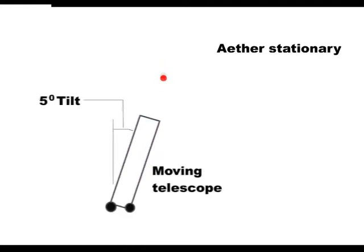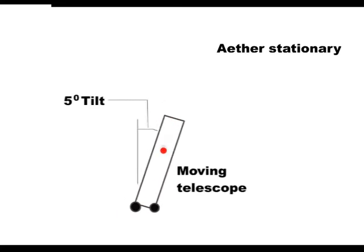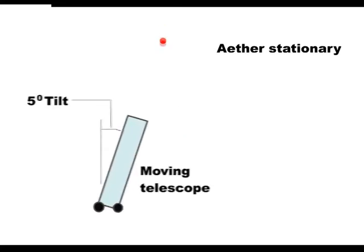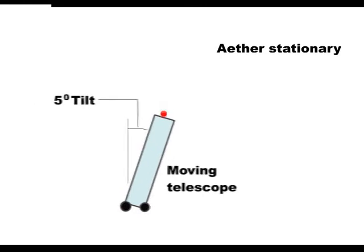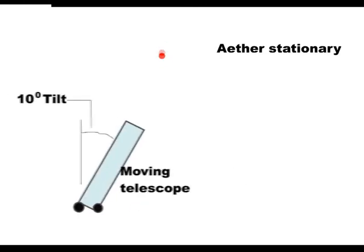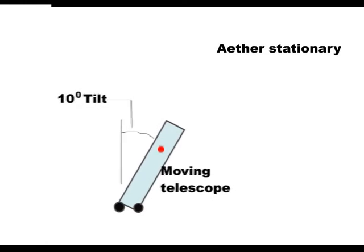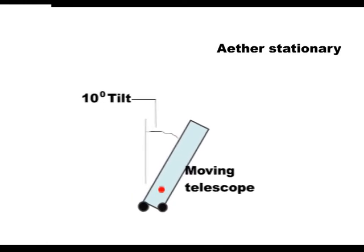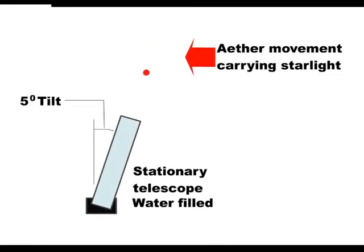To recap, if it is the telescope that is moving, then when it is filled with water, it has to be tipped further to see the star. If the telescope is stationary and the starlight drifting past us, then it does not have to be tipped further.